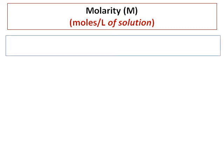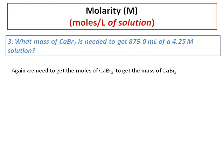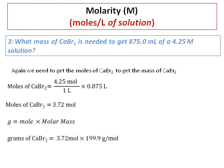One more molarity question: What mass of calcium bromide is needed to prepare 875 milliliters of a 4.25 molar solution? Here, the molarity is given and we need to find the mass of solute. Using molarity: 4.25 mol/L times 0.875 liters gives moles of calcium bromide. Then applying grams equals moles times molar mass, where the molar mass of CaBr₂ is 199.9 grams per mole, the mass of calcium bromide equals 743 grams.